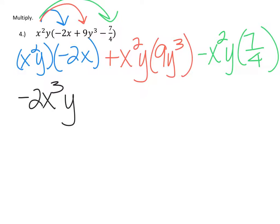For the second term, x²y times 9y³: write the 9 coefficient first, then write variables in alphabetical order. Start with x—we don't have any other x terms, so bring down x². Then y times y³: keep the base, add the exponents to get y⁴, since this y has an exponent of 1.